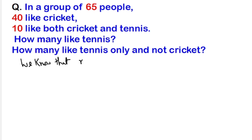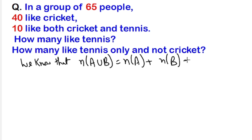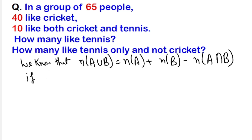We know the formula of set theory: n(A∪B) = n(A) + n(B) - n(A∩B), where n(A) is the number of people of a particular group.